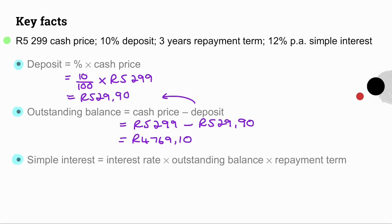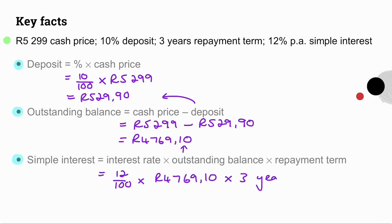Then our simple interest equals the interest rate times the outstanding balance times the repayment term: 12% per annum times R4,769.10 times 3 years. This gives simple interest of R1,716.88.